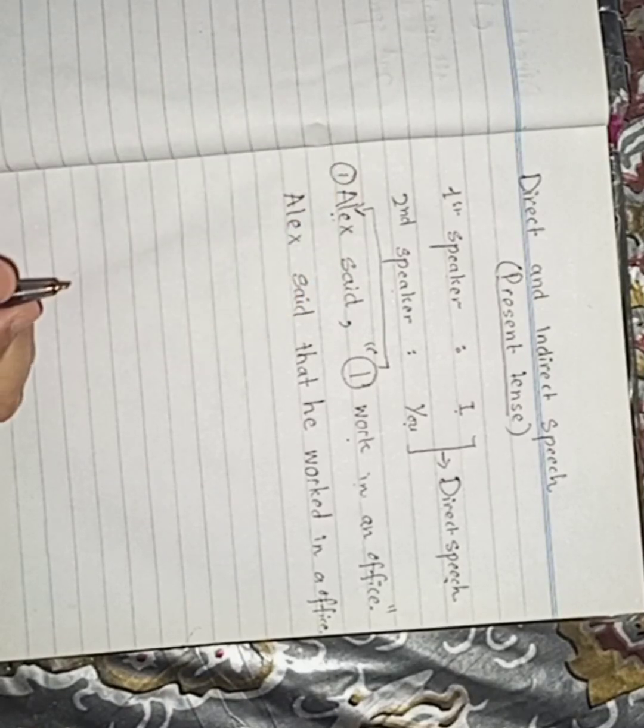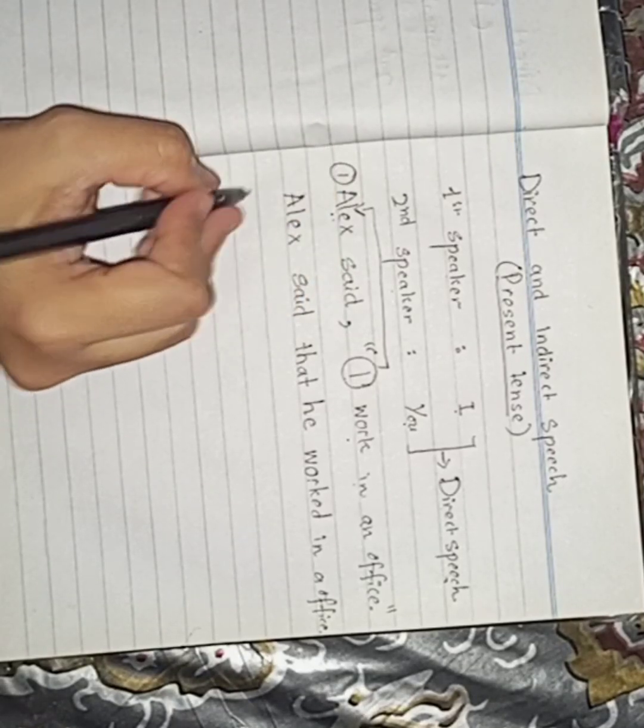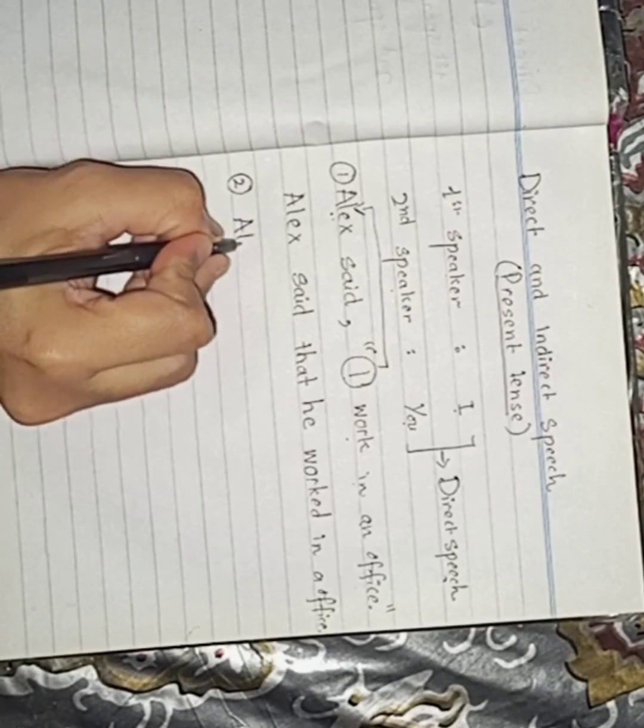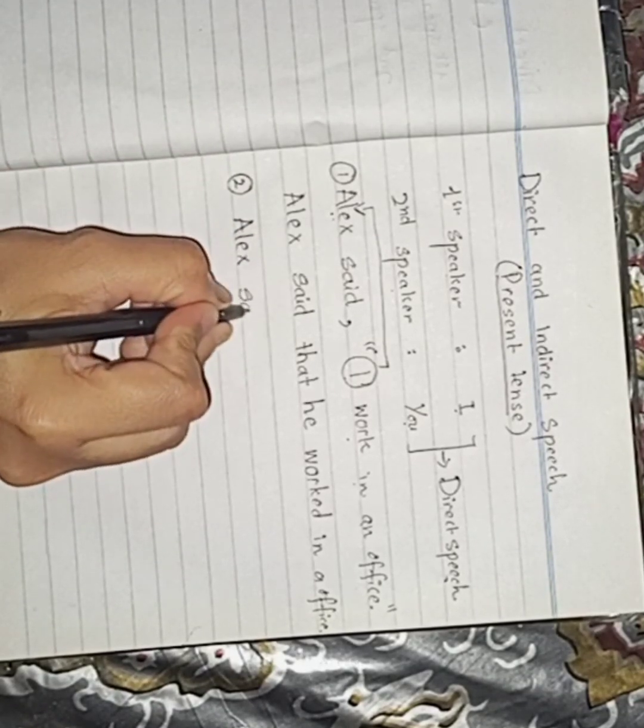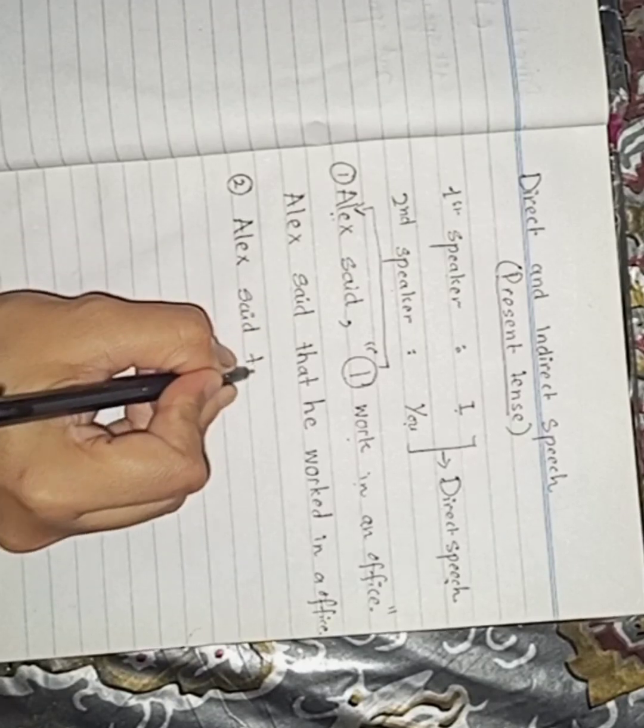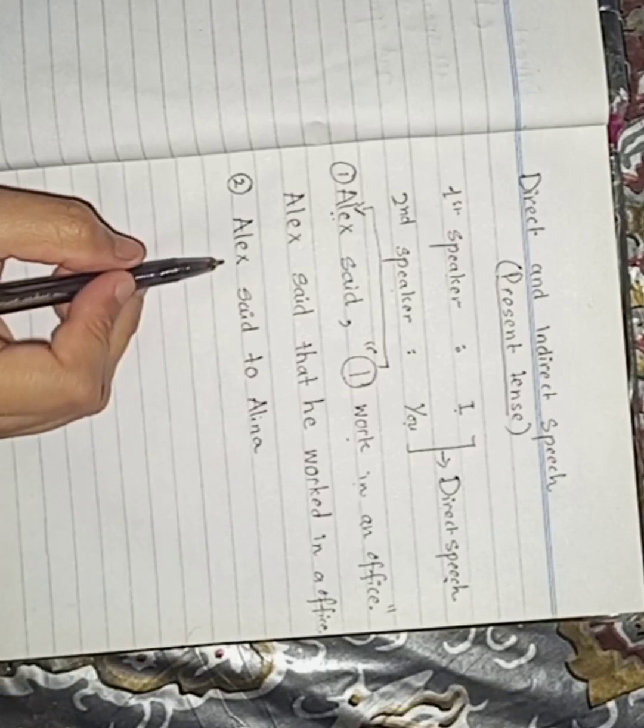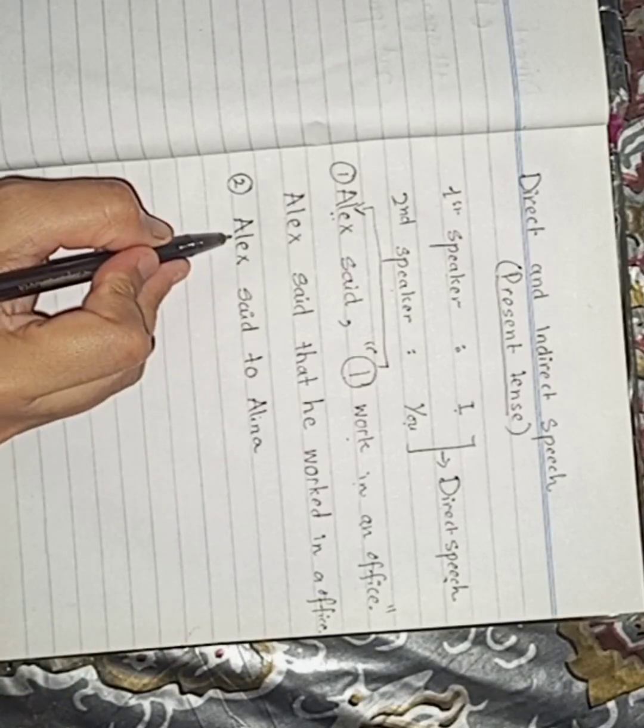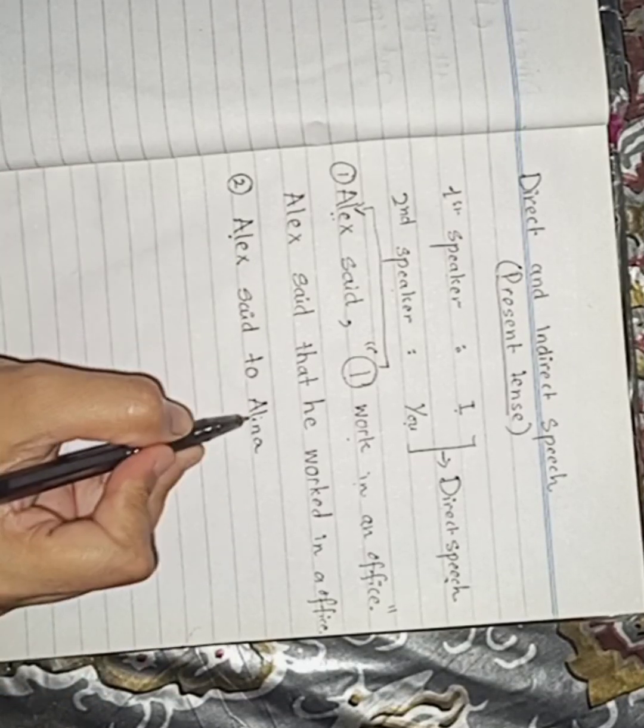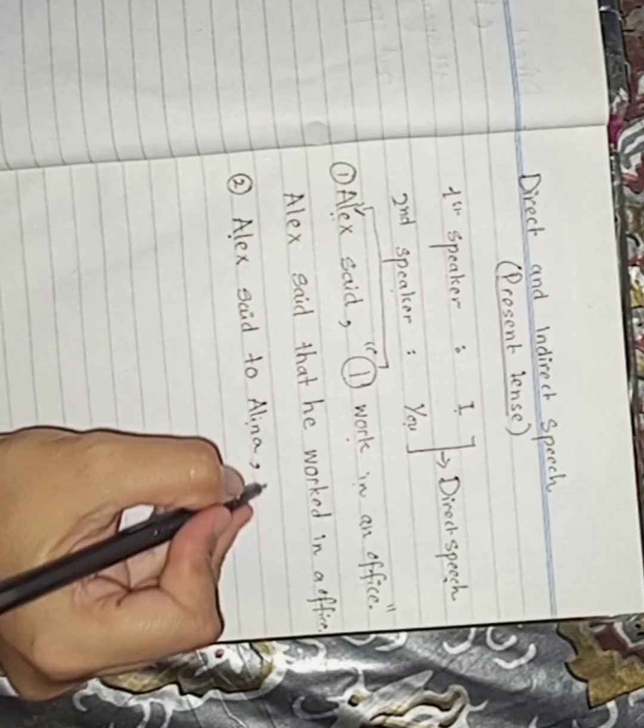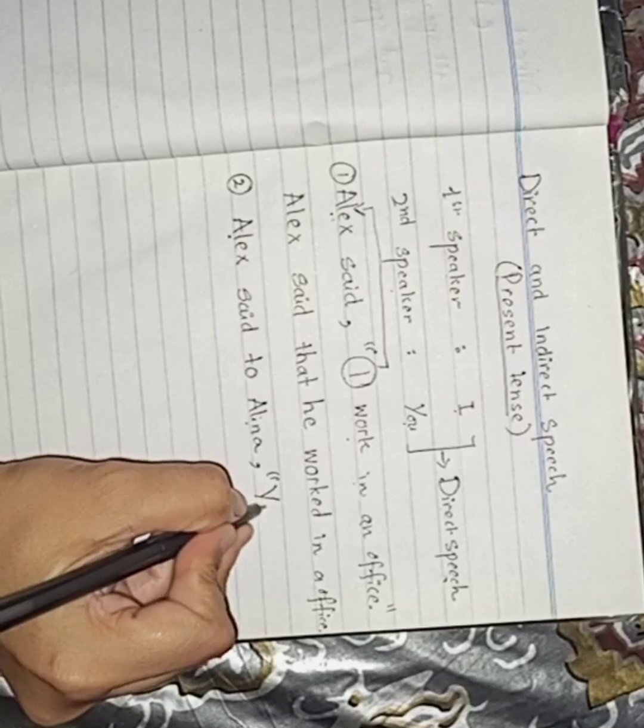Now let's look at another example of this speech with two speakers. Alex said to Alina. Okay. Now you see there are two speakers. First speaker is Alex and the second speaker is Alina. Now let's see what Alex says to Alina.